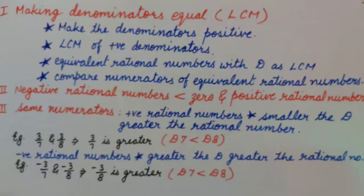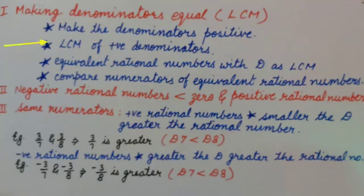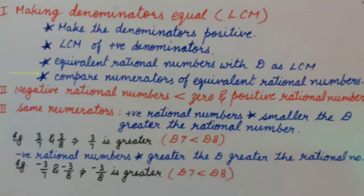The first method is making denominators equal, or by taking LCM. First we will make the denominators positive, then take out the LCM of positive denominators, convert each rational number into equivalent rational numbers with the denominator as LCM — by LCM divided by denominator, multiplied by numerator, upon LCM — and then compare the numerators of equivalent rational numbers at last.